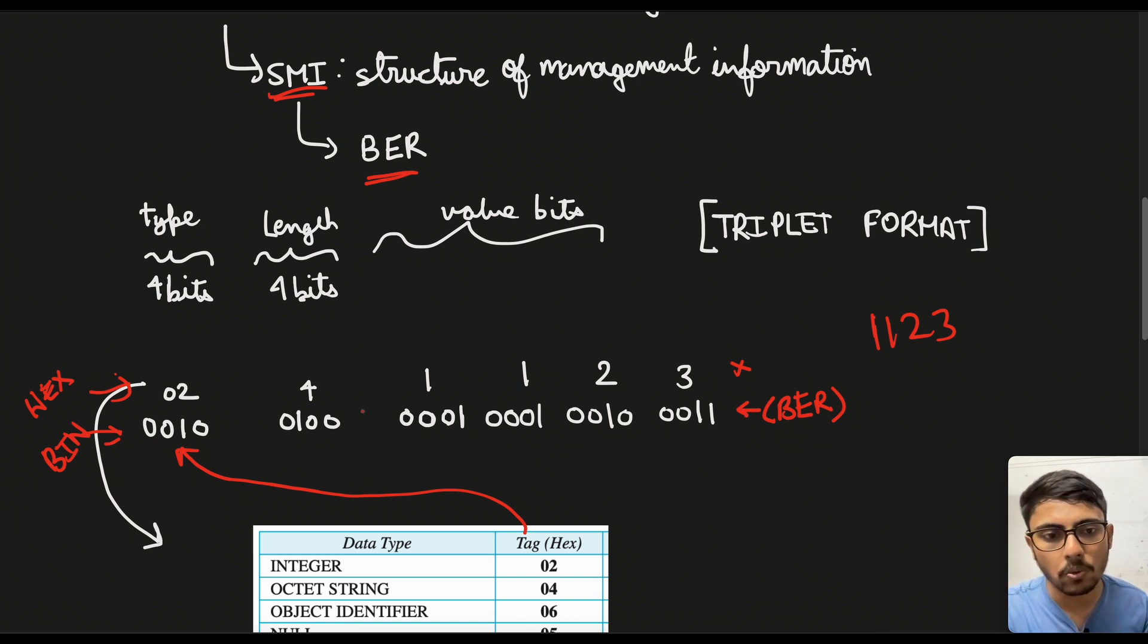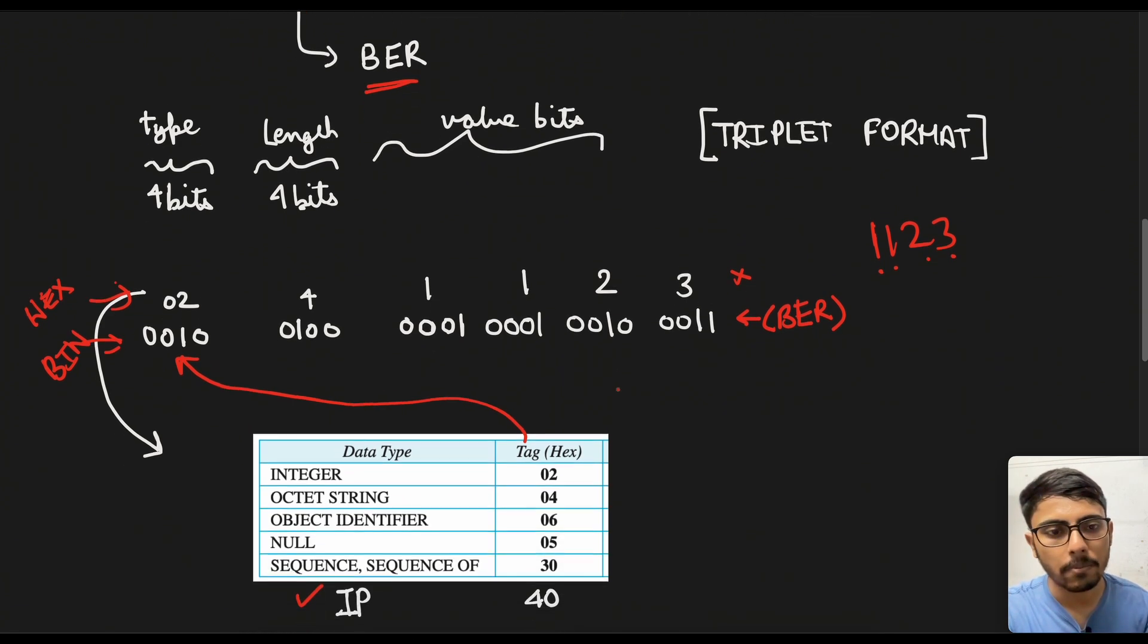Then the length is basically 1123, 4 numbers are there, so 4 bits. And then it is written 4. And then 1123 is written in binary. Perfect.